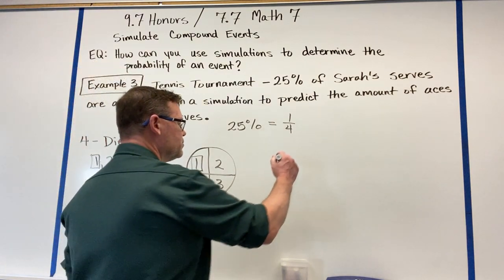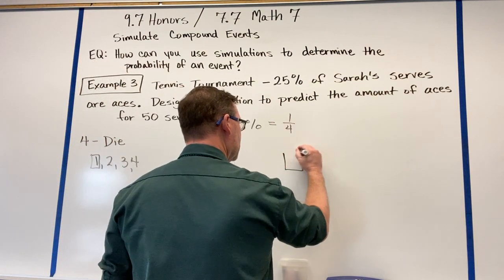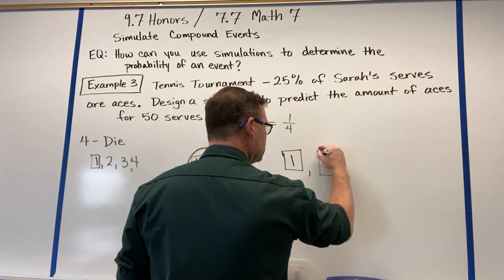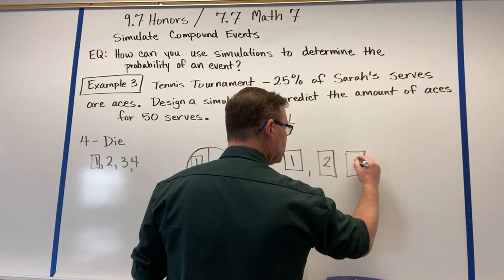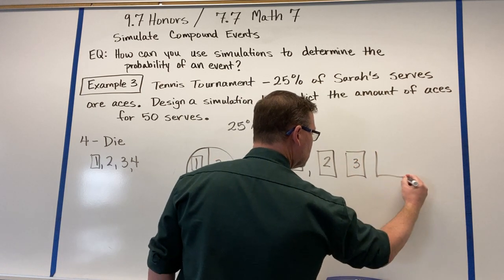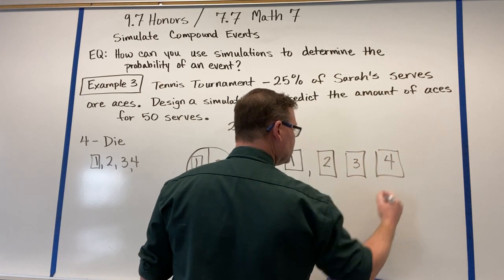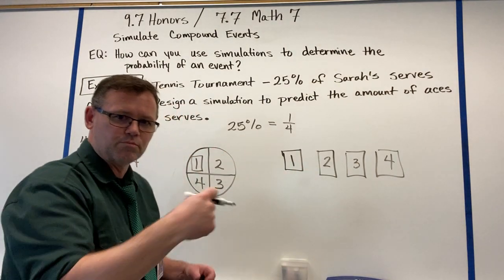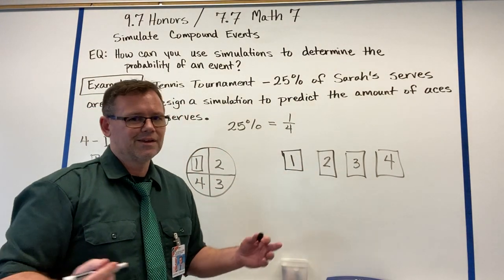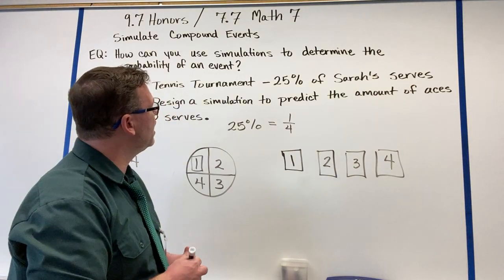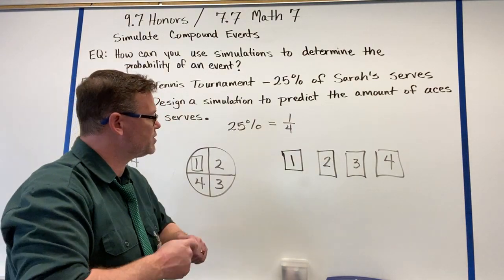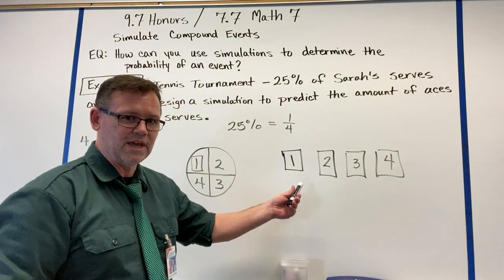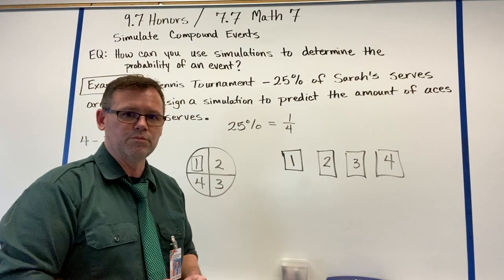The other one is we do cards. So I have a card with one, two, three, and four. And we put them into a bag, and we draw out the cards, and then put it back in. Same type of simulation. You always have four possible outcomes. You assign one of them to be the ace, and you go through the simulation.